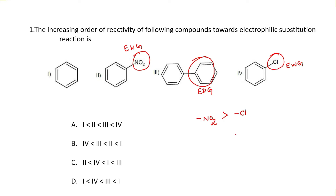They have asked for the increasing order, that is reactivity from least to most. The least reactive among these compounds is nitrobenzene, then comes chlorobenzene, then benzene, and the most reactive one is biphenyl. So option C is the correct answer.